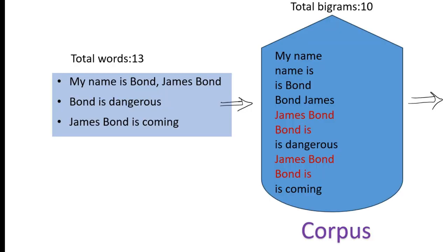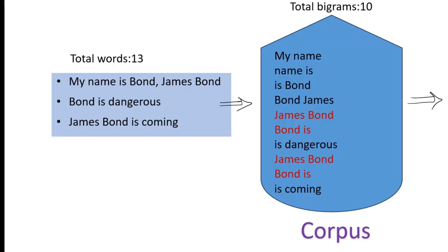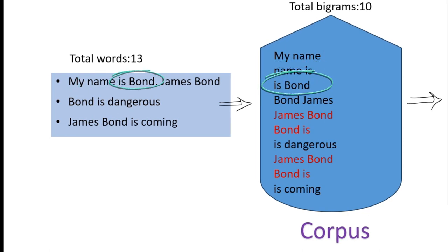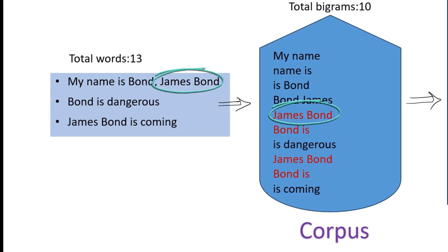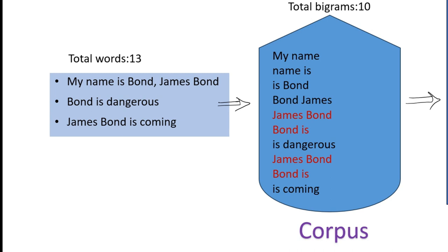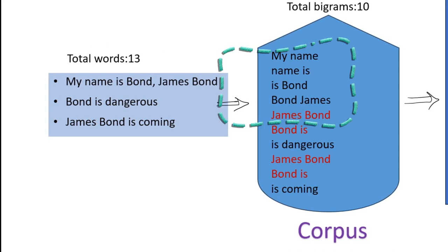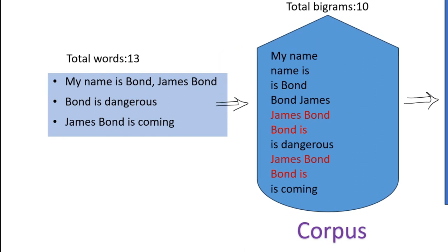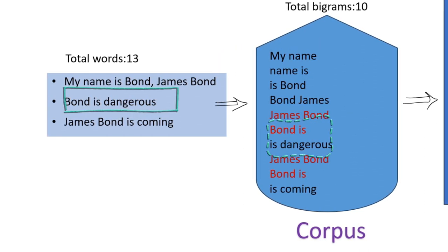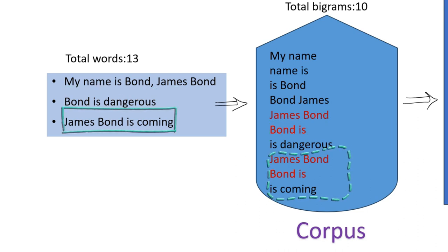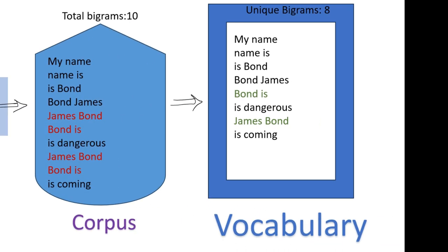From the first sentence, we take: my name, name is, is bond, bond james, and james bond. We cannot take 'my bond' because they are not adjacent to each other. The set of two words are called bigrams. We then repeat this process for the other sentences and put all the bigrams in the corpus. We create the vocabulary by keeping unique bigrams and discarding the rest.